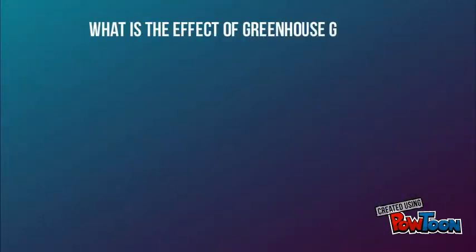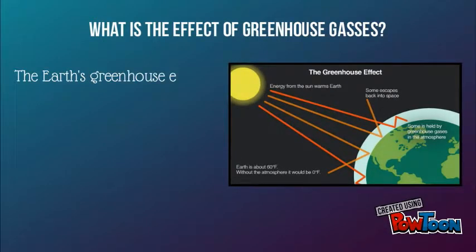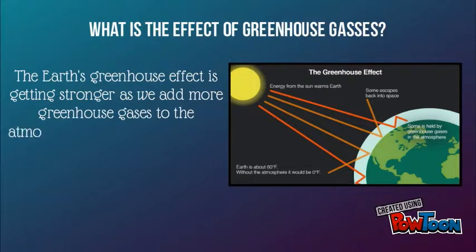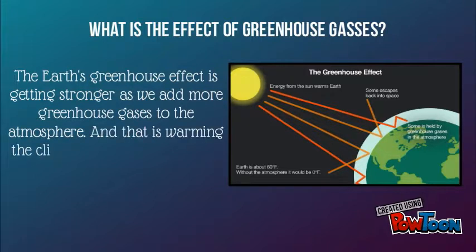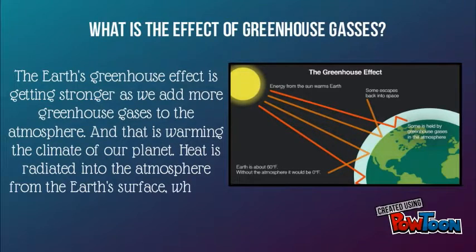What is the effect of greenhouse gases? The Earth's greenhouse effect is getting stronger as we add more greenhouse gases to the atmosphere, and that is warming the climate of our planet. Heat is radiated into the atmosphere from the Earth's surface, which is warmed by the sunlight.